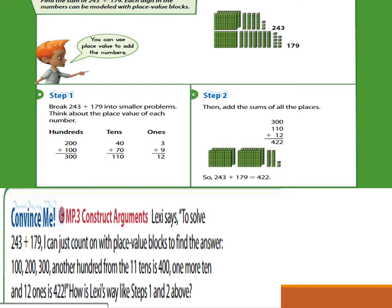Think about the place value of each number. Find the hundreds: 200 and 100, so 200 plus 100 equals 300. After that, find the tens: 40 plus 70 equals 110. Find the ones: 3 plus 9 equals 12. Now add the partial sums: 300 plus 110 plus 12 equals 422. So 243 plus 179 equals 422.